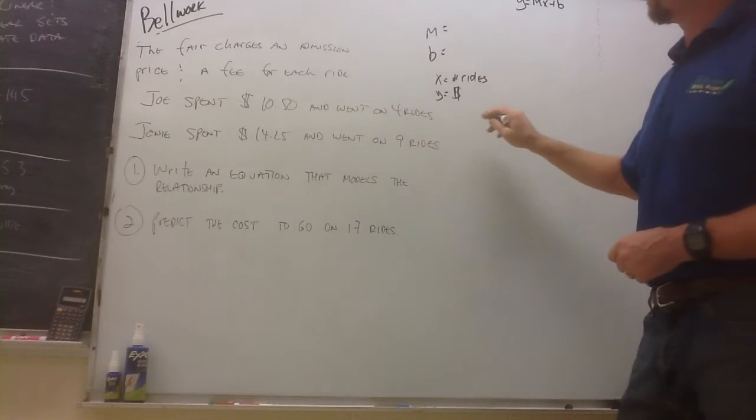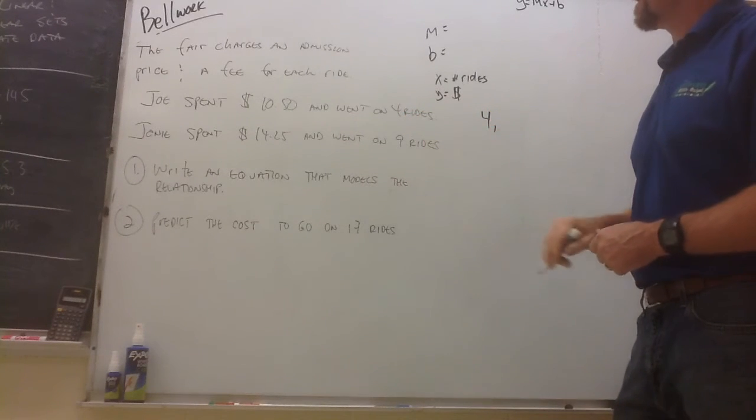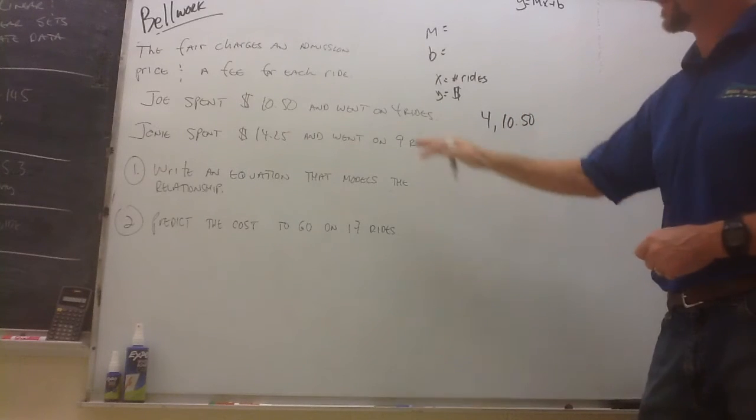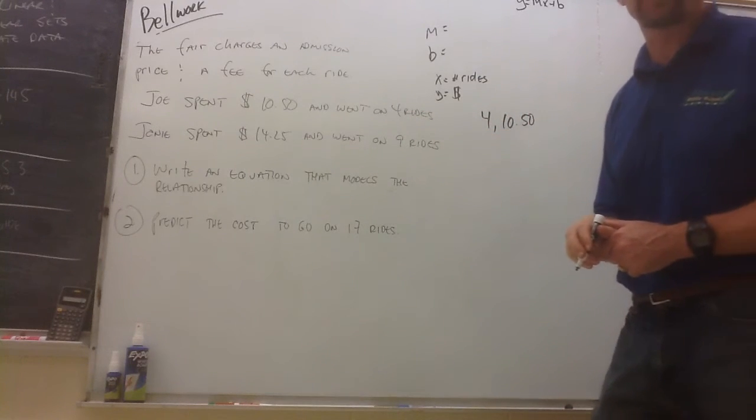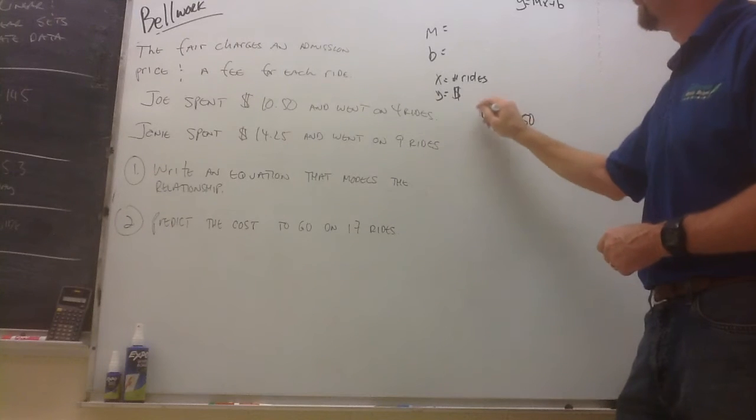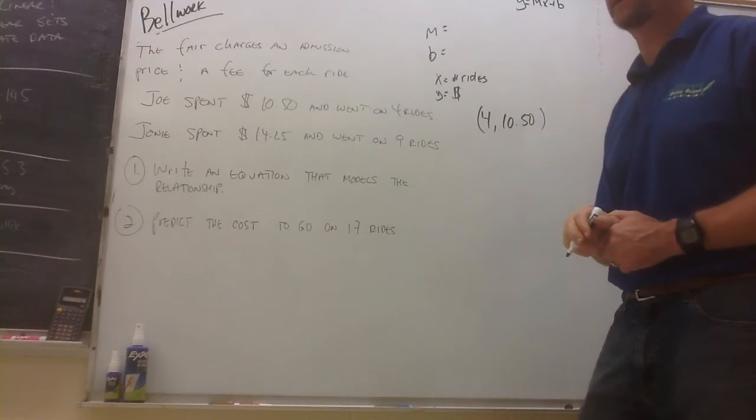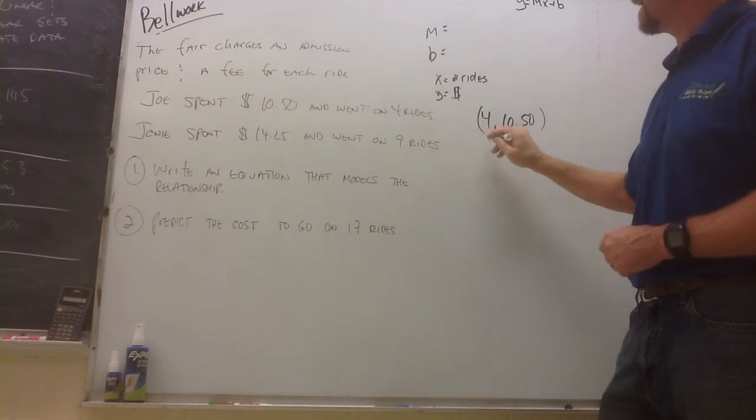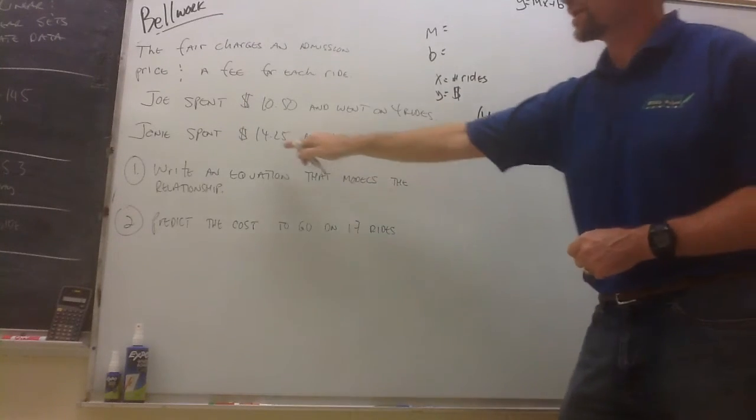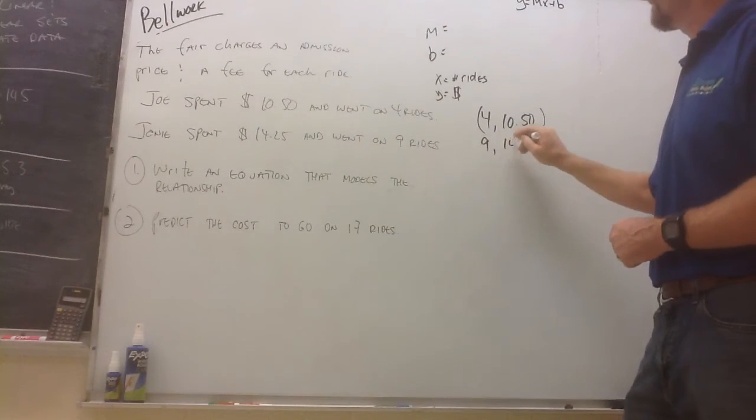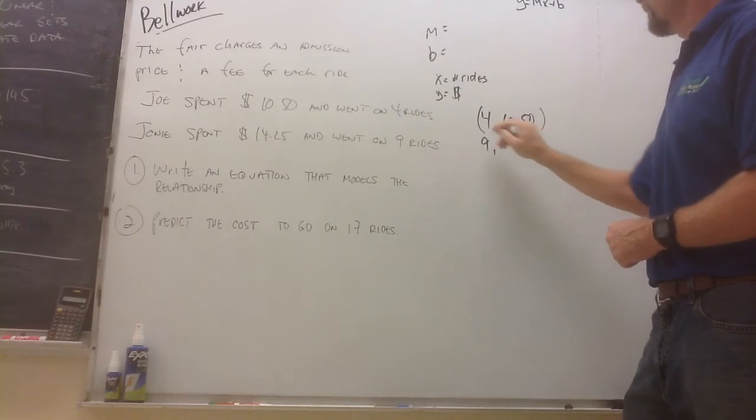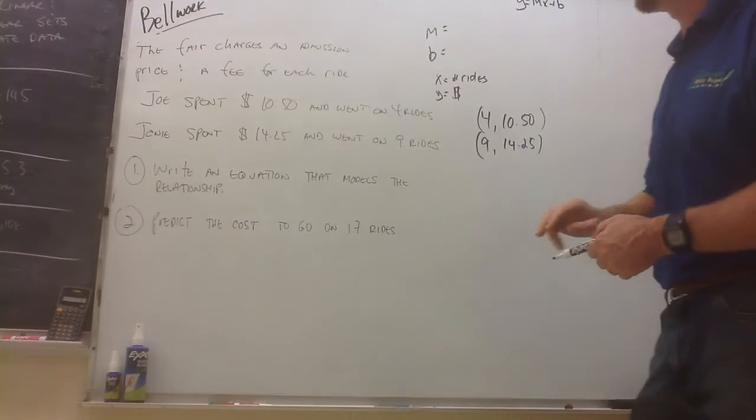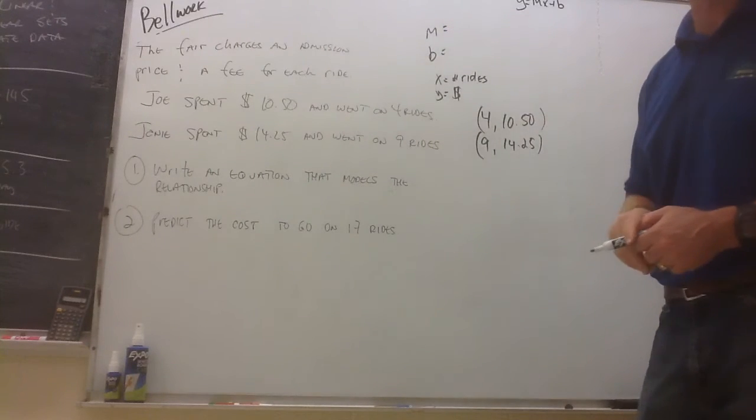Well, we know that when x is 4, 4 rides costs $10.50. That's one ordered pair. That's one point we could put on the coordinate plane. When x is 4, y is $10.50. We also know that when x is 9, 9 rides would cost $14.25. Okay, so we set that information up as two ordered pairs so that we can use the slope formula to find the slope of the line.